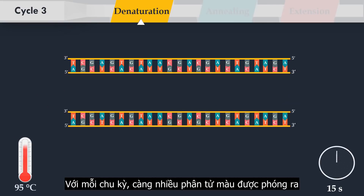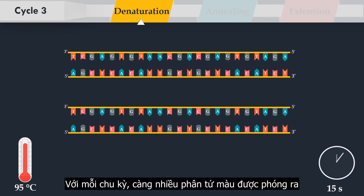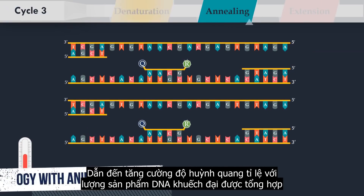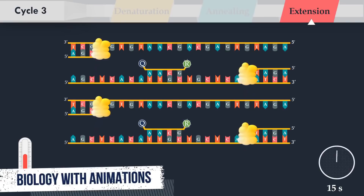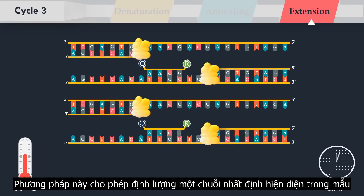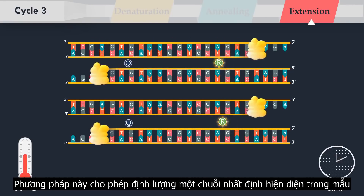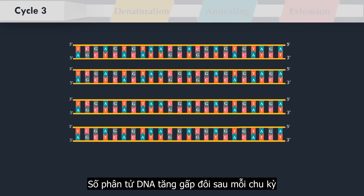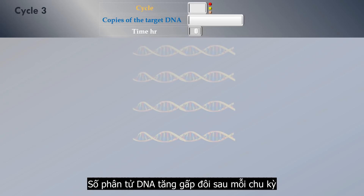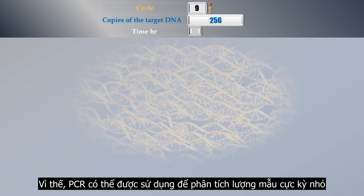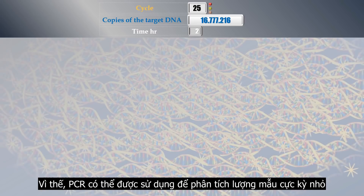With each cycle of PCR, more dye molecules are released, resulting in an increase in fluorescence intensity proportional to the amount of amplicon synthesized. This method allows the estimation of the amount of a given sequence present in a sample. The number of double-stranded DNA pieces is doubled in each cycle; therefore, PCR can be used to analyze extremely small amounts of sample.